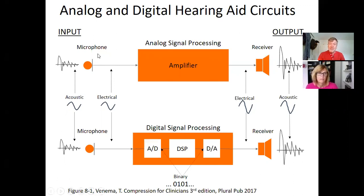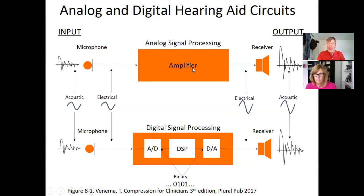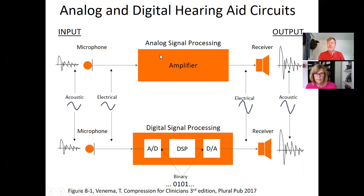Here's your input, your mic. A mic is just a transducer — it changes energy from one form to another. The mic changes sound waves into electricity, acoustic into electrical. Then that electricity was amplified by the battery-supplied amplifier, increasing the electrical current. Then the receiver, which is a backward mic — a speaker — changes electricity into acoustic energy again. So you had sound changed into electricity, and electricity changed back into sound. Analog hearing aids are all hardware: mic, amp, and receiver.